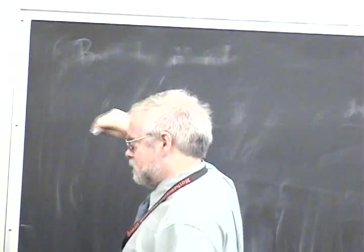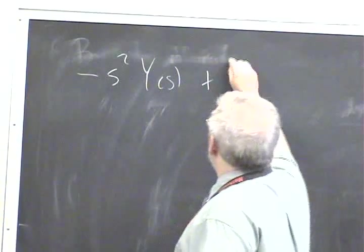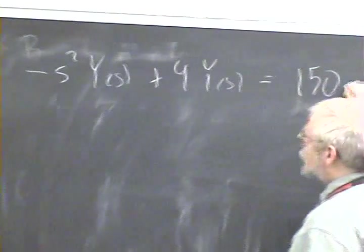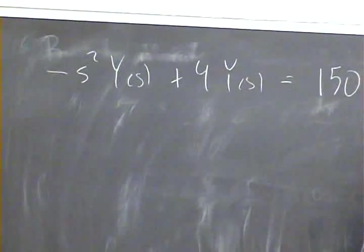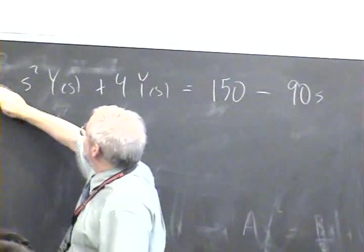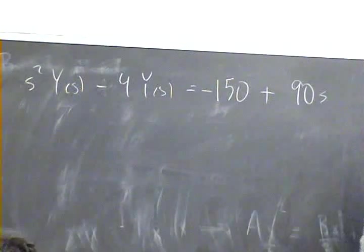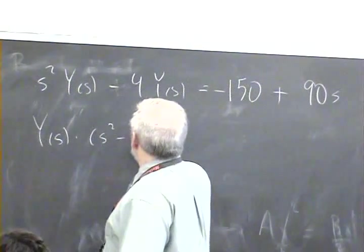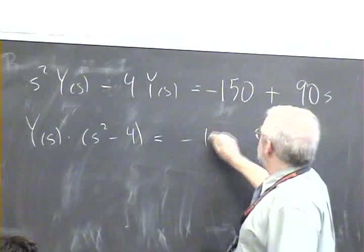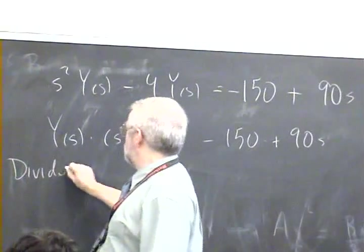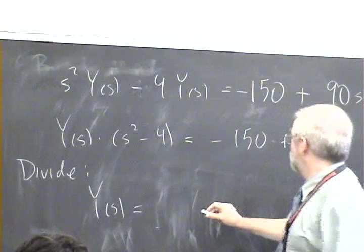Now we want to solve. We want to eliminate one of the variables. Let's eliminate X(s) and solve for Y(s). Eliminate X(s) - let's solve for X(s), say, in this equation, plug it into the other equation. So X(s) = (90 - s·Y(s))/s. That's this quantity here. Minus 150 equals -4Y(s).